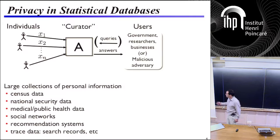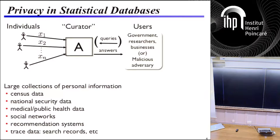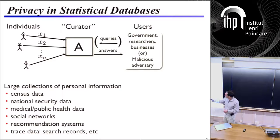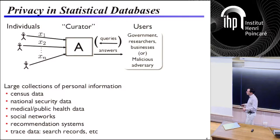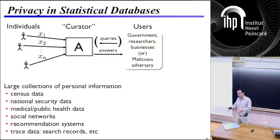The setting I'll be using for essentially the entire tutorial, with some exceptions, is privacy in statistical databases. Imagine we've got a bunch of individuals who have their data, and this data is being collected by some agency, company, or something — which we'll just call the curator, or the algorithm that's processing the information. The curator's goal is to make some kind of aggregate statistics about this data set as publicly available as possible — for government, for researchers, businesses. Large collections of information are ubiquitous, and a lot of these are collections of very personal information: census data, government surveys, national security data, public health data, social networks.